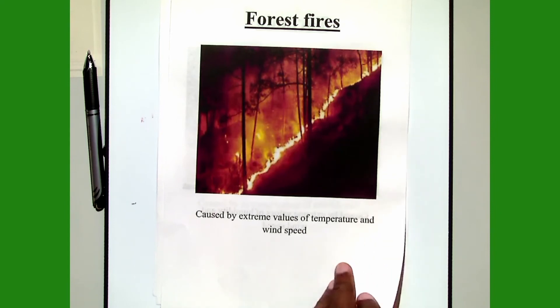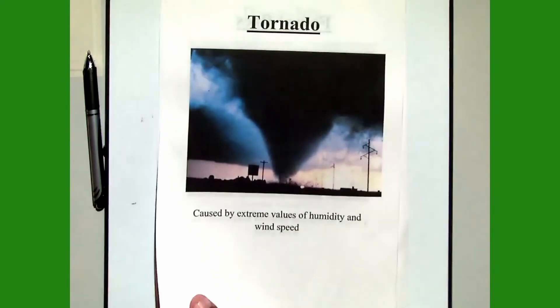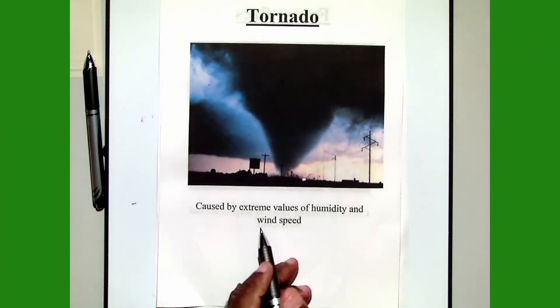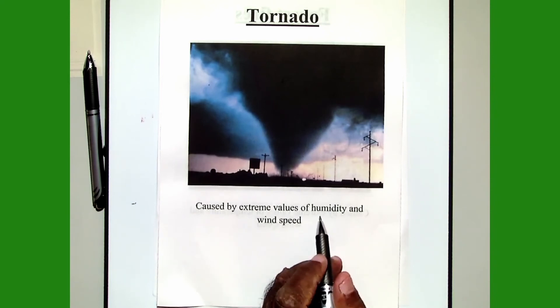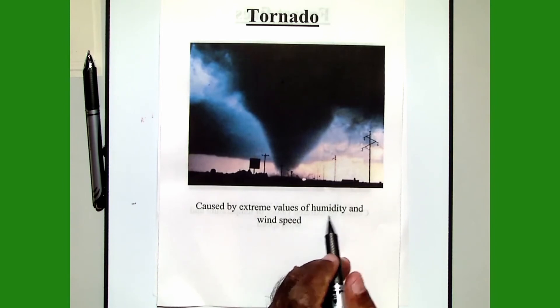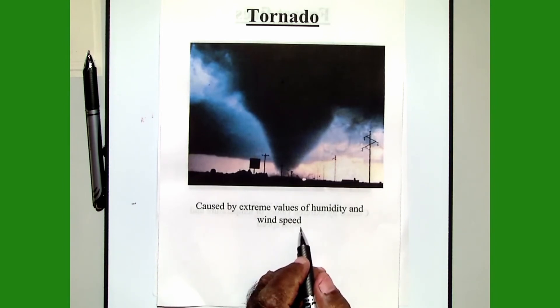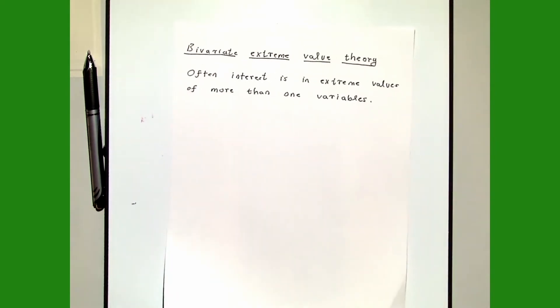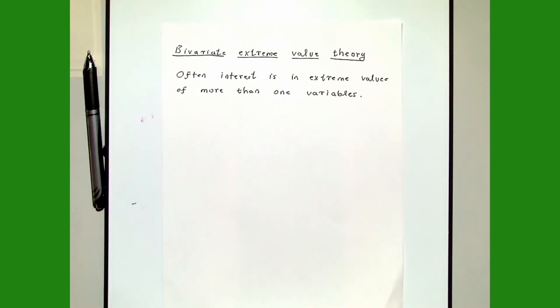The final example is tornadoes. Tornadoes are caused by extreme values of humidity and wind speed, so here you are interested in extreme values of humidity and extreme values of wind speed. So each of these examples involves extreme values of more than one variable.